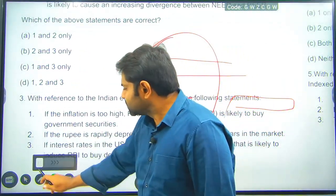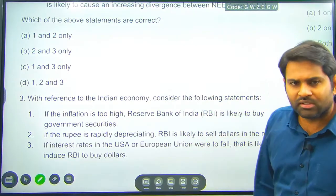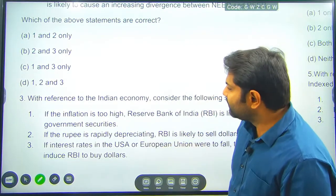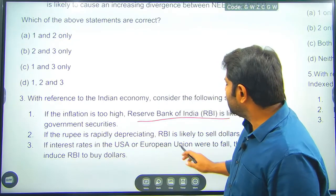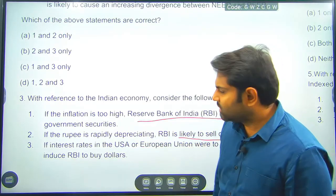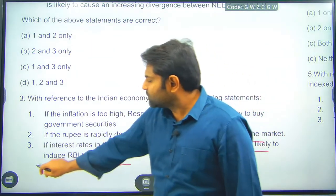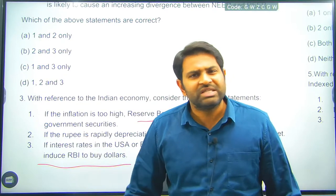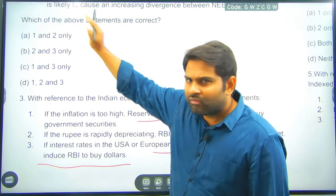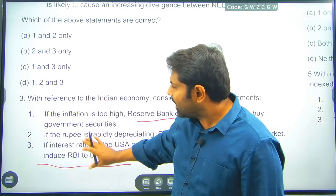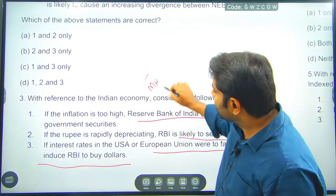Next question: 'With reference to Indian economy, consider the following statements. If inflation is too high, RBI is likely to buy government securities. If the rupee is rapidly depreciating, RBI is likely to sell dollars in the market. If interest rates in the US or European Union were to fall, that is likely to induce RBI to buy dollars.' If you see these questions, there is no static part — these are all dynamic, about monetary policy.